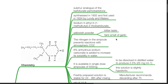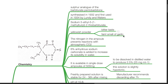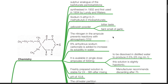The chemistry of thiopenthal. Thiopenthal is a sulfur analog of the barbiturate pentobarbitone. It was first synthesized in 1932 and first used in 1934 by Lundy and Waters. The chemical name is sodium-5-ethyl-5-1-methylbutyl-2-thiobarbiturate. It is a yellowish powder with bitter taste and a faint smell of garlic. The nitrogen in the ampoule prevents reaction with atmospheric carbon dioxide.